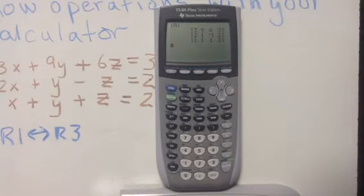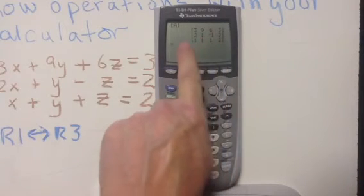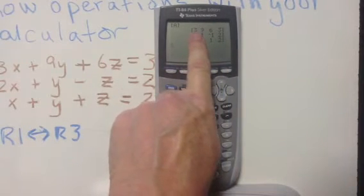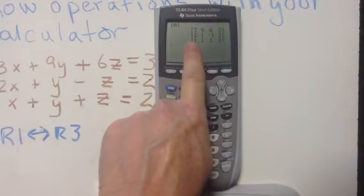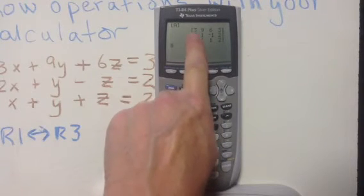If at all possible, you want a 1 in this first position up here. And in order to get that, we can swap row 3 with row 1.